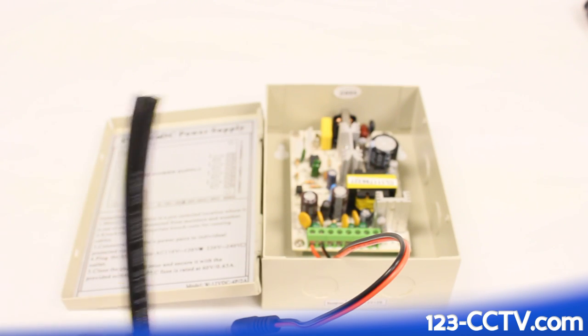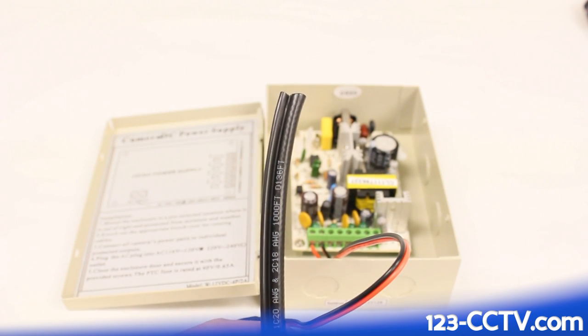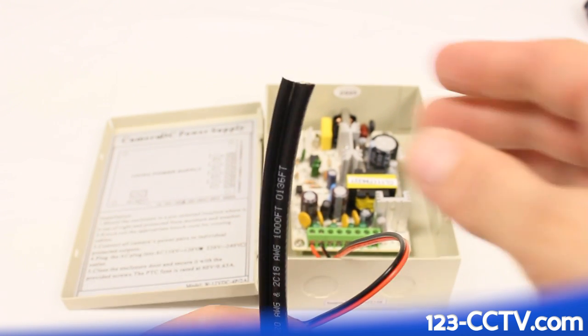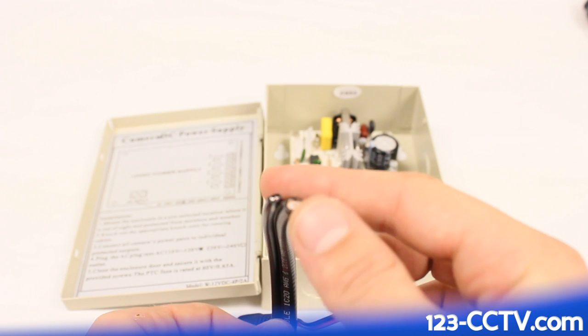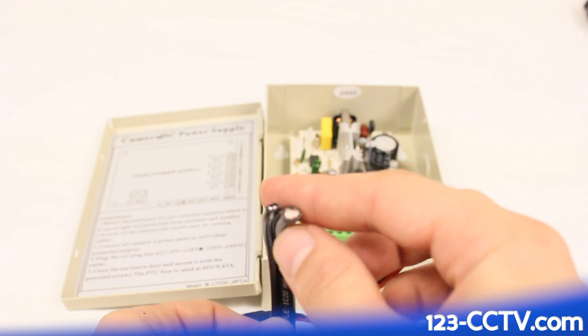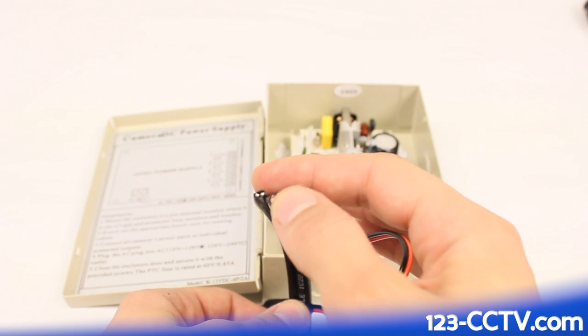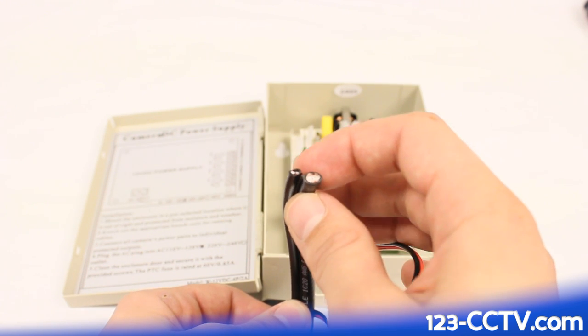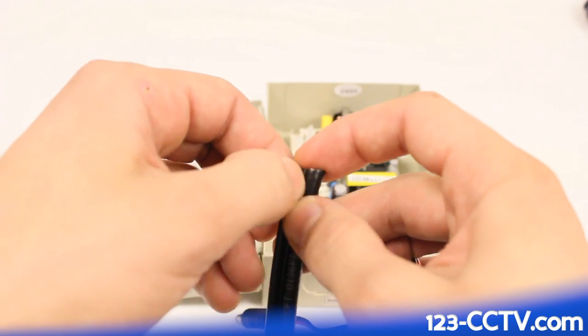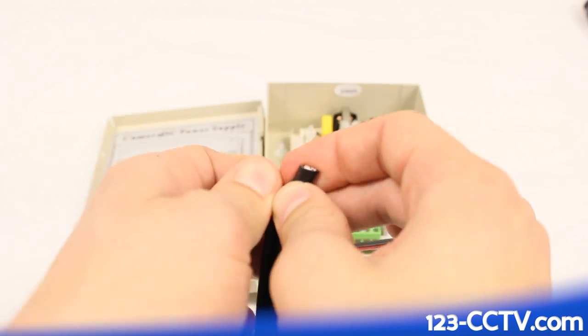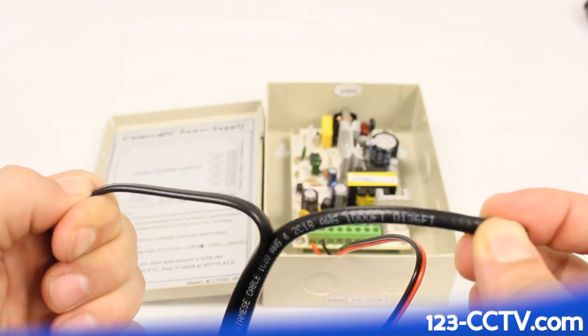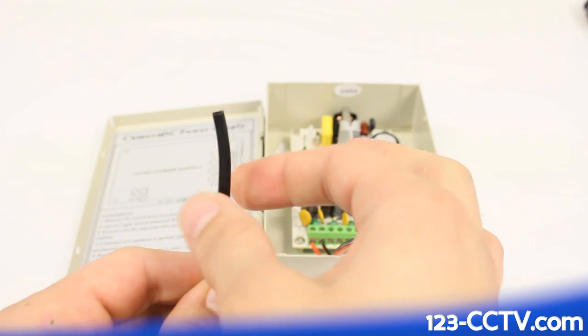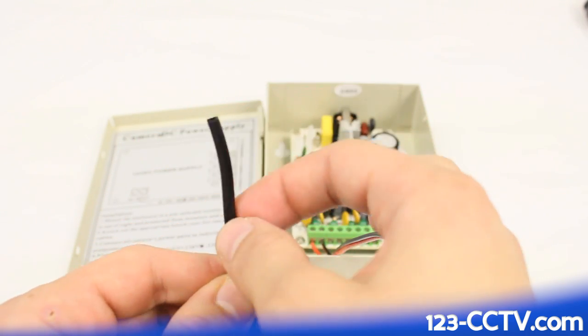The process for installing bulk Siamese cable is almost exactly identical, there's just one extra step. Siamese coax cable consists of a video and a power. The video is one solid wire, and the power side of the cable has a positive and negative. So we're going to strip this away and shave off this black coating on top of the positive and negative wire.